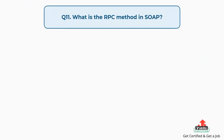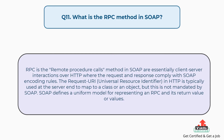Question number eleven: What is the RPC method in SOAP? RPC is the remote procedure calls method, and SOAP are essentially client-server interactions over HTTP where the request and response comply with SOAP encoding rules. The request URI in HTTP is typically used at the server end to map to a class or an object, but this is not mandated by SOAP. SOAP defines a uniform model for representing an RPC and its return value or values.